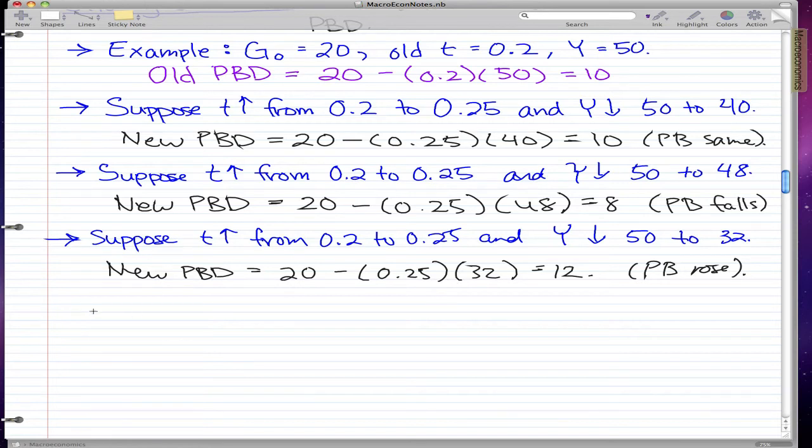So what is the moral of the story? It's much like what we did with the change in government spending, and that is the changing T may cause PB to go up, down, or stay the same. So it's uncertain.